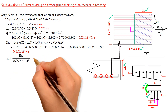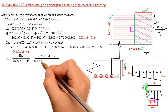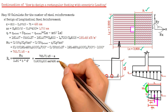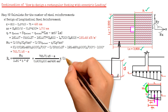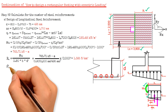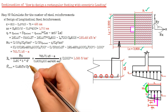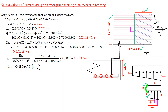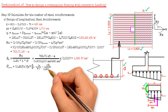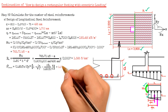Then we calculate r sub n, which equals moment Mu 763.71 kN·m divided by 0.9 times width b 2500 mm times effective depth d 495 mm squared times 1000 squared, giving 1.385 N/mm². After that, we solve for the actual steel ratio using the formula 0.85 times fc prime over fy times [1 minus square root of (1 minus 2 r sub n divided by 0.85 fc prime)], and the result is 0.00345.